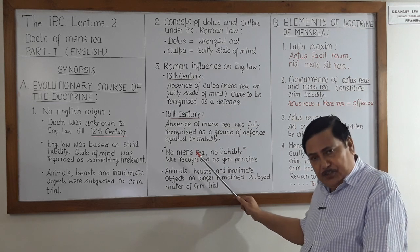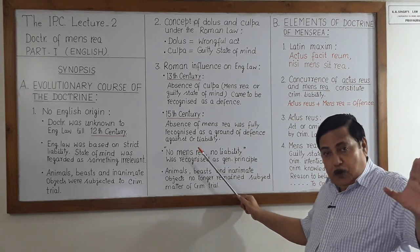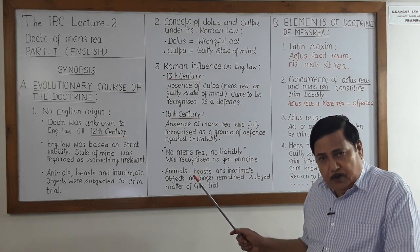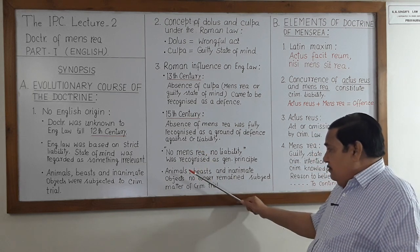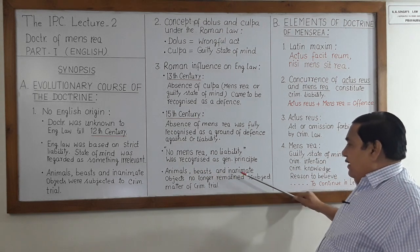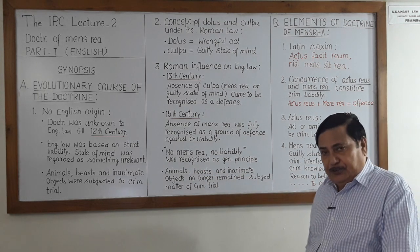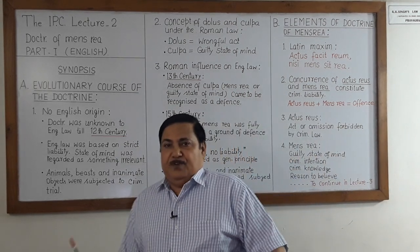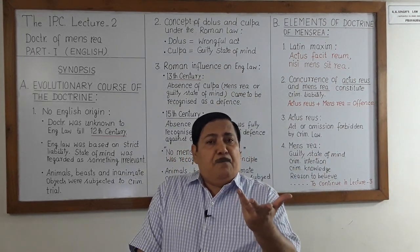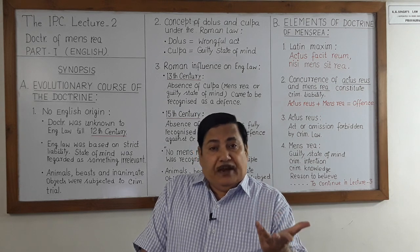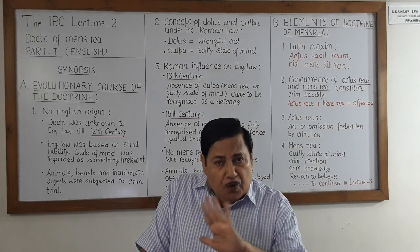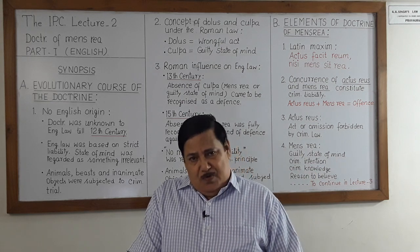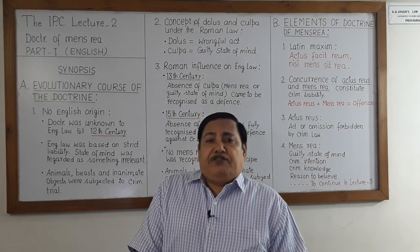With such a change in outlook and in the philosophy of law, animals, beasts, and inanimate objects were absolved of criminal trial. How can an animal, beast, or inanimate object have mensrea? They cannot possess mensrea. So now, they were absolved of criminal trial.